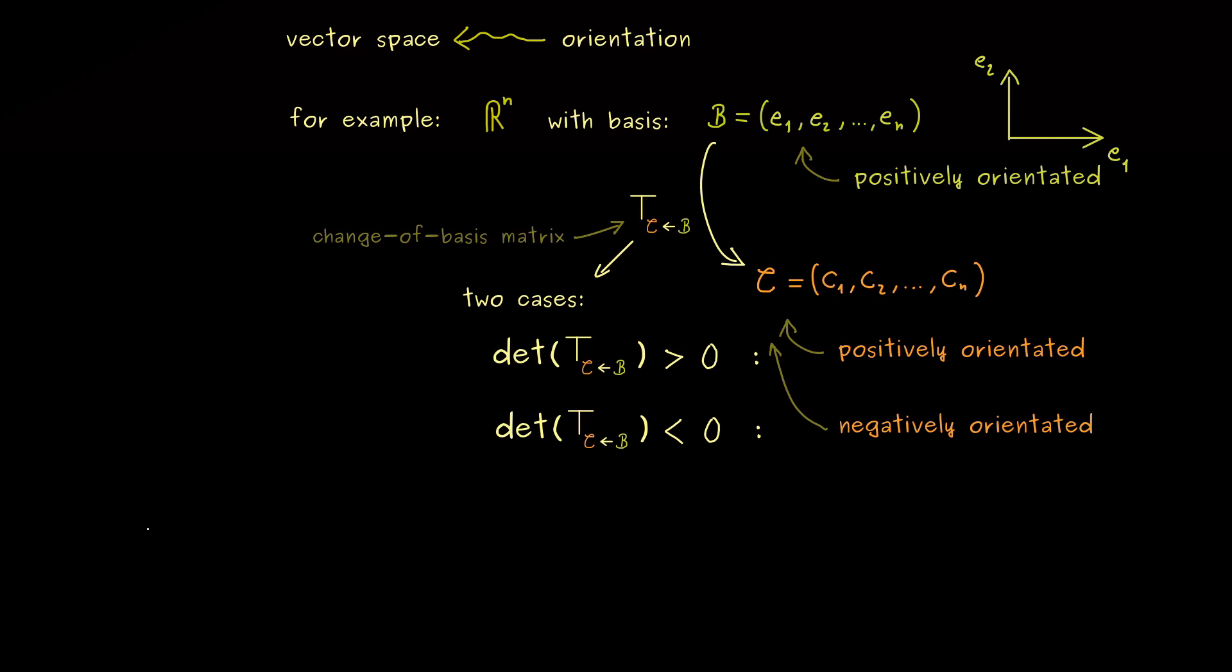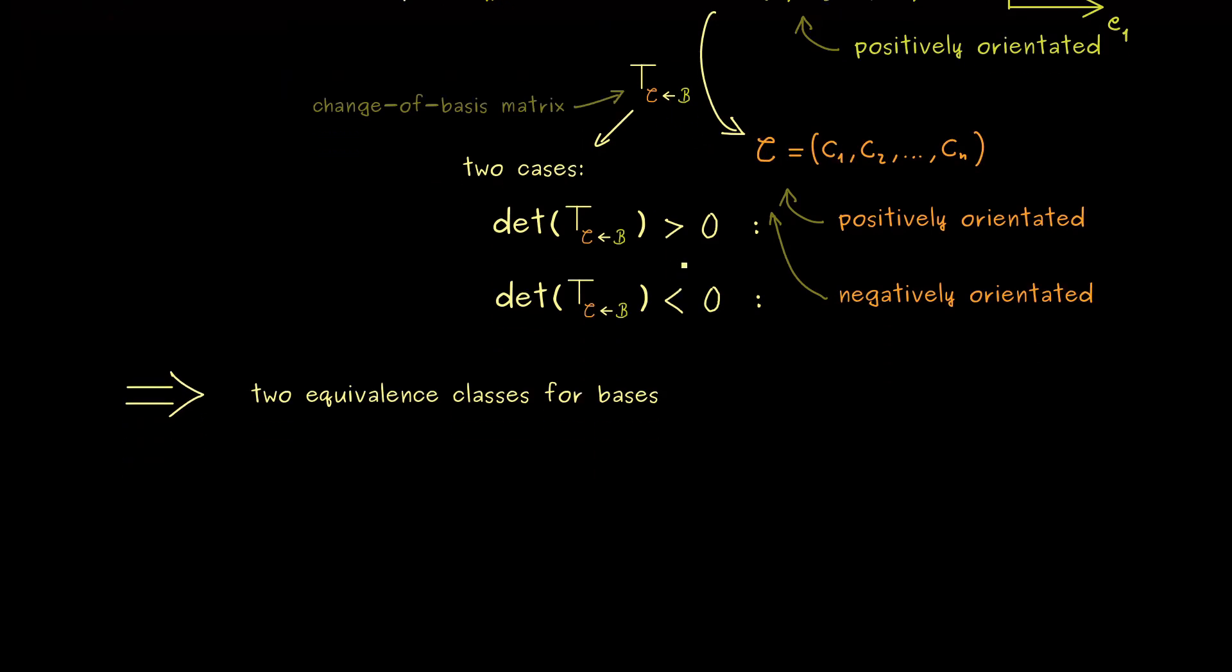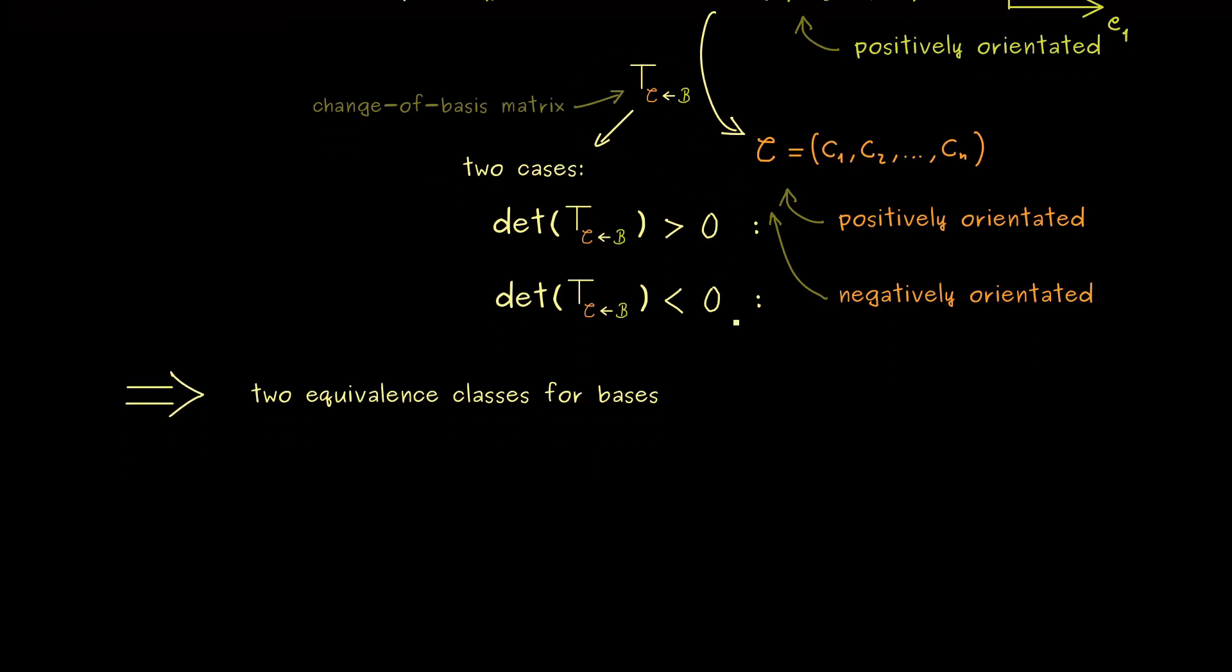In the correct mathematical terms, you would say we have two equivalence classes for bases. And we don't have to write down this equivalence relation because you already see it. It's given by the sign of the determinant of the transition matrix. So we have exactly two boxes.